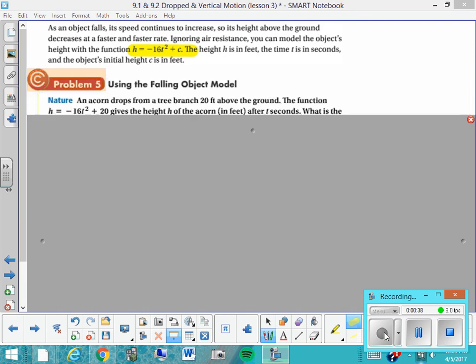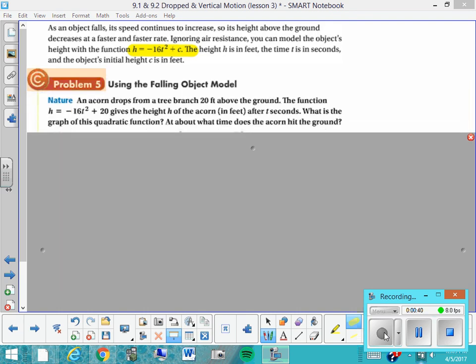Okay, so let's take a look at a problem. It says an acorn drops from a tree branch 20 feet above the ground. The function h equals negative 16t squared plus 20 gives the height h of the acorn in feet after t seconds. What is the graph of the quadratic function, and about what time does the acorn hit the ground? And so you can notice that for this problem, we've taken c, the initial height, and since they told us the tree branch was 20, they substituted in that 20 there.